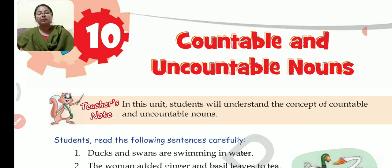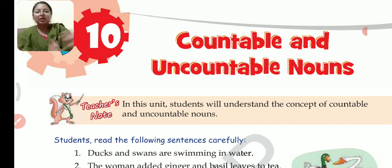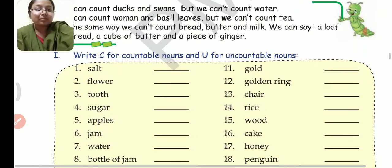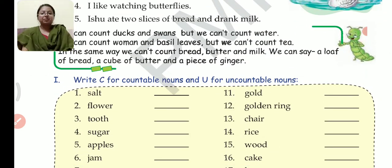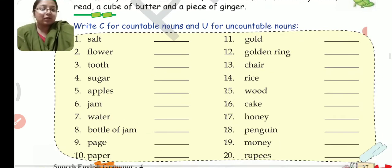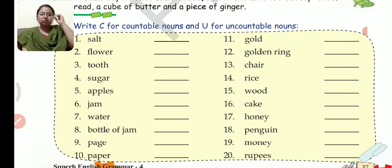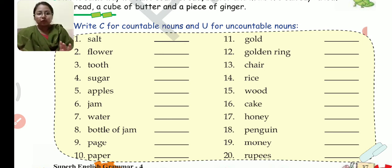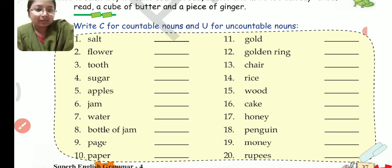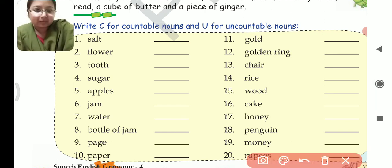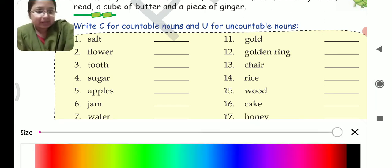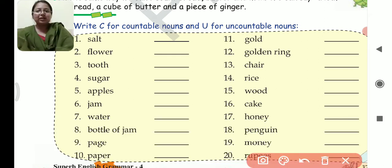I hope the concept of countable and uncountable nouns is clear to everybody. Now students, let's come to the exercises. Write C for countable nouns and U for uncountable nouns. You have to write C for countable and U for uncountable. This is a very easy exercise. Let me take my pen and let's start.